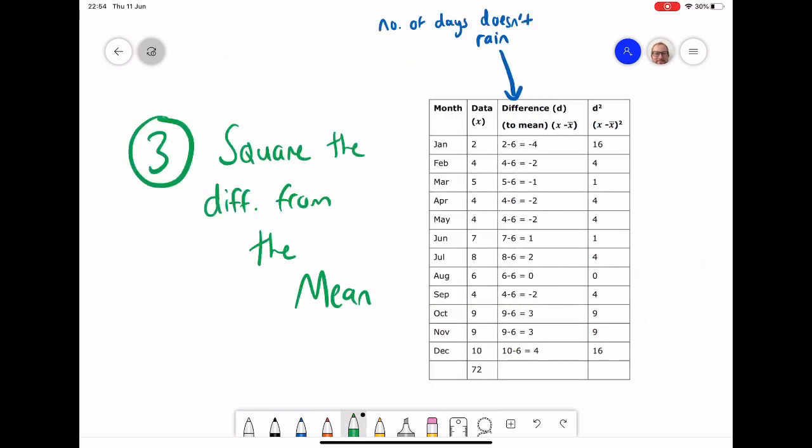So we've now calculated the mean. We've taken the mean away from each data point so this second column is the difference from the mean. What we then need to do, because we've got some minus figures in here, is square that difference from the mean.